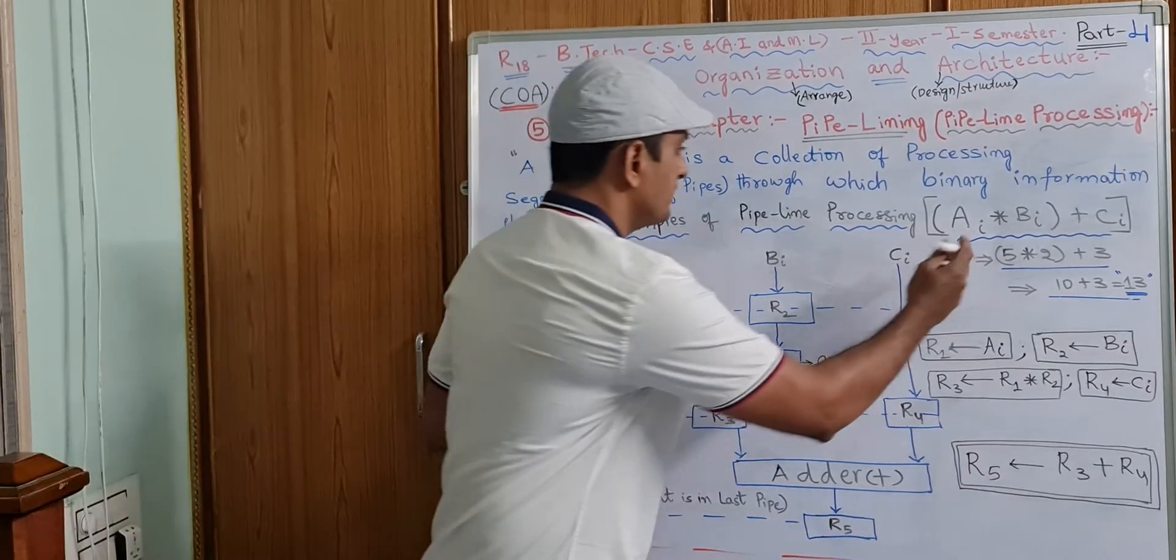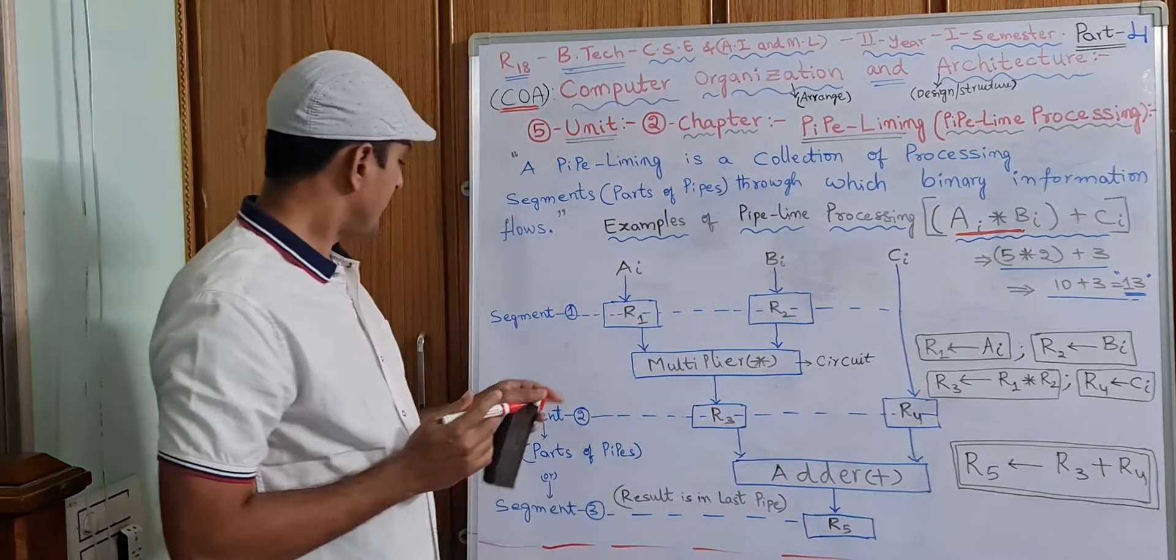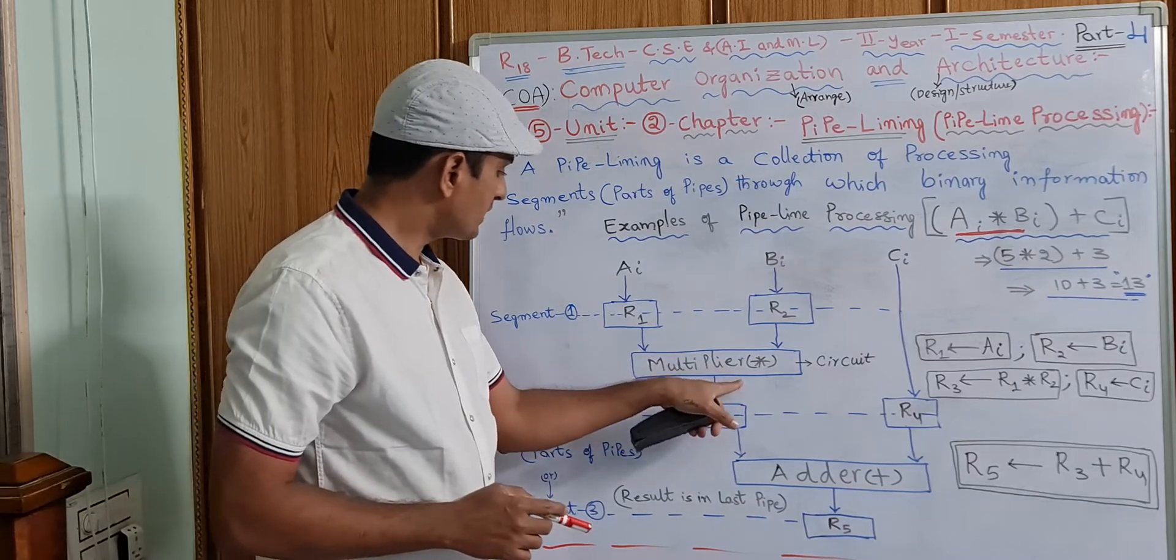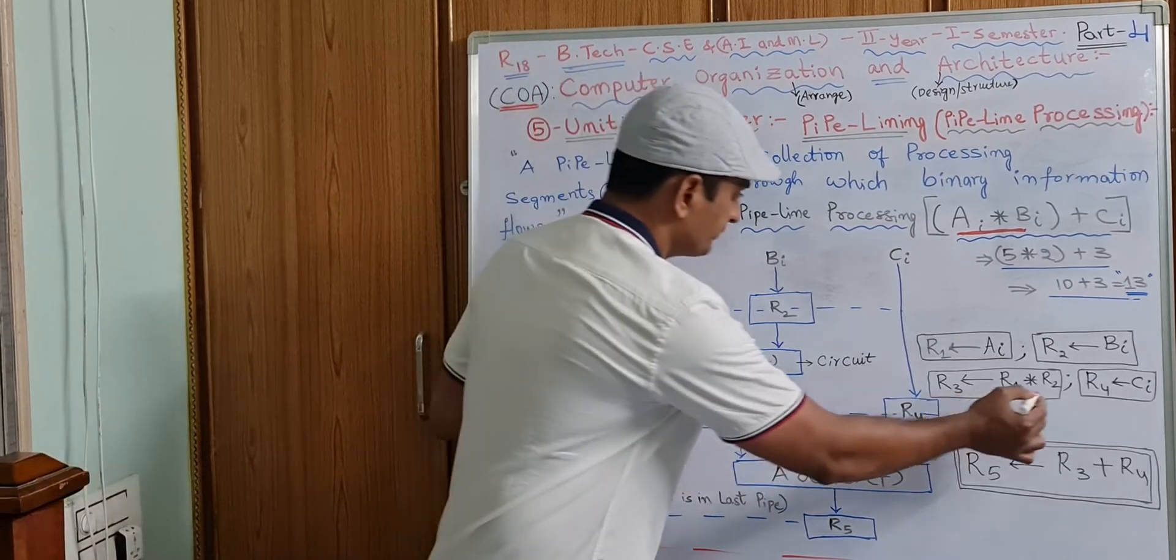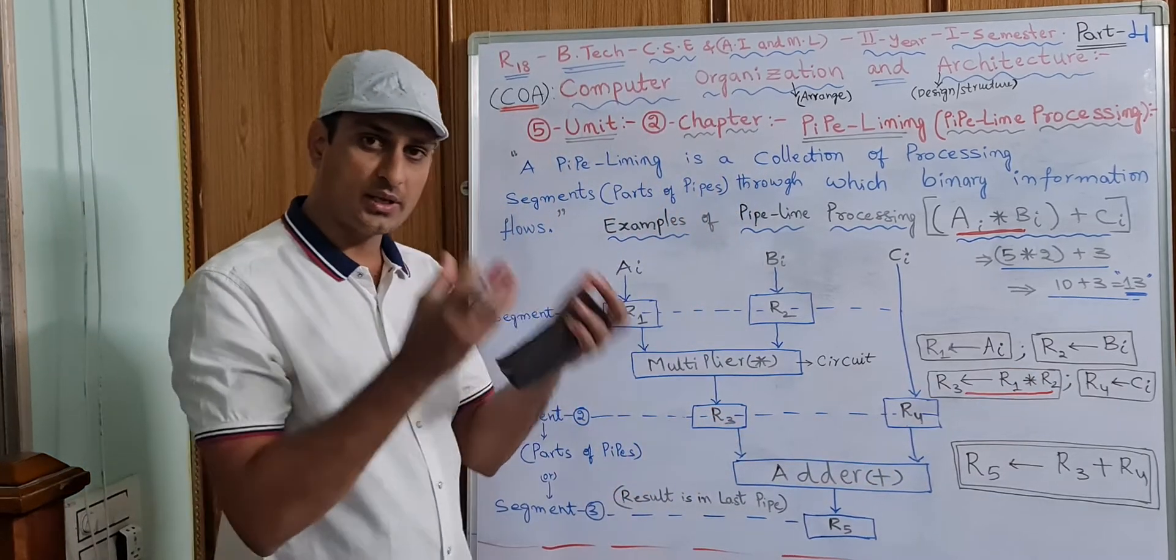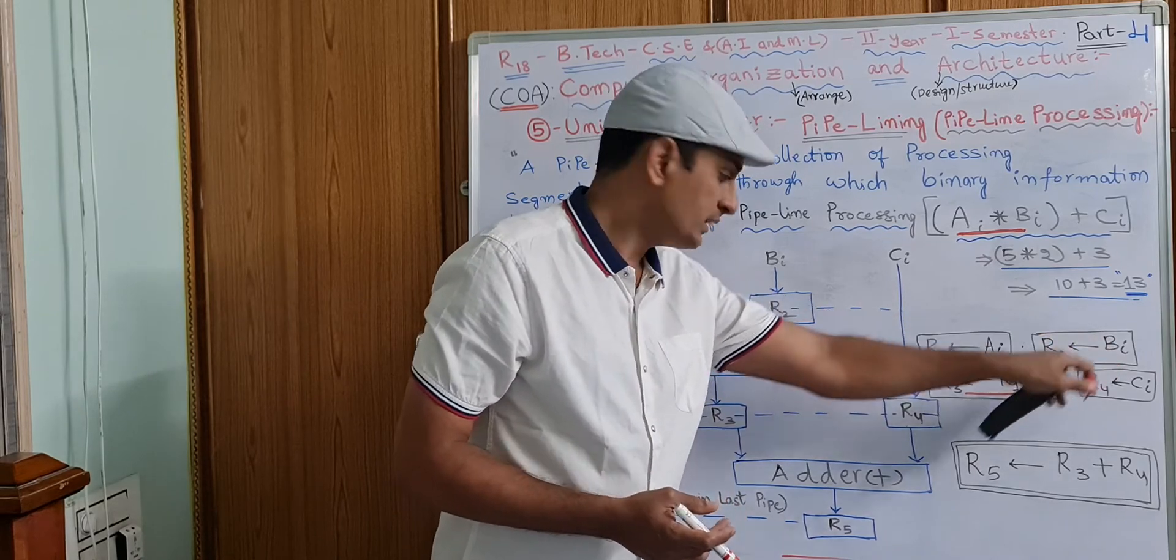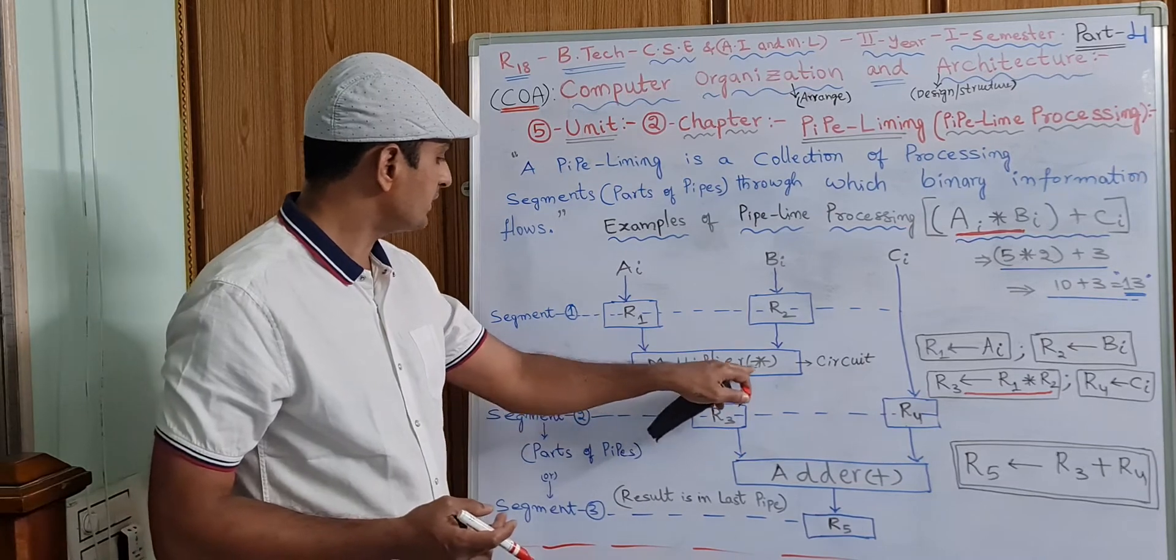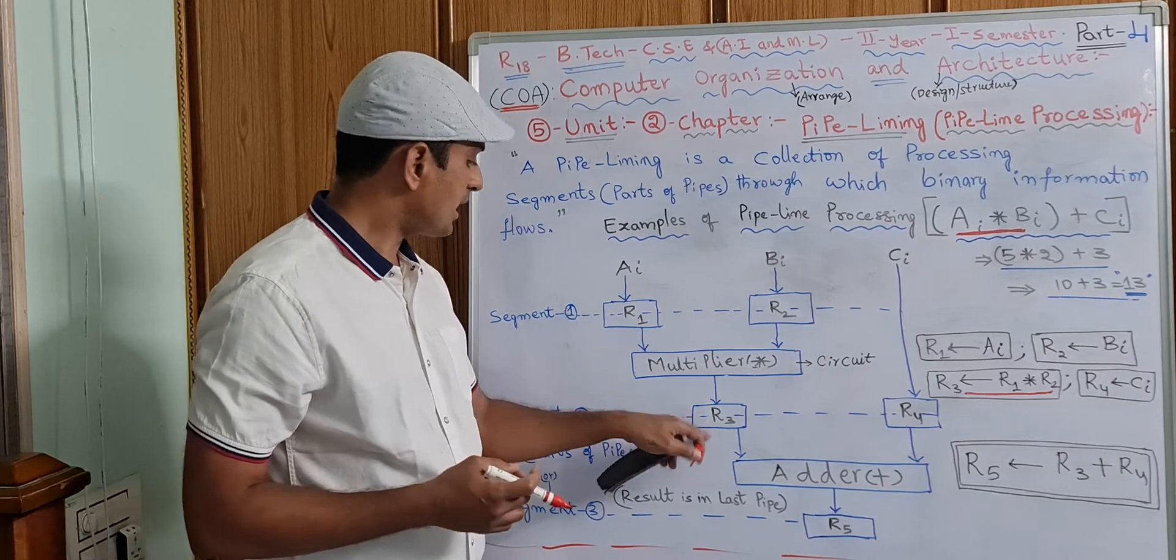This operation, AI into BI, and next segment, part 2. In the second part, this multiplication result will be inserted into the R3 register through the multiplier circuit.